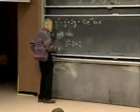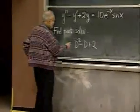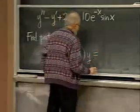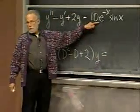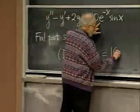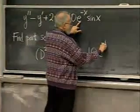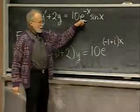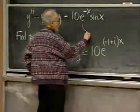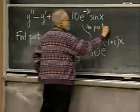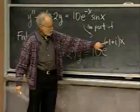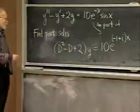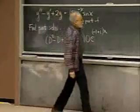Actually, let's not solve the messy quadratic for the complementary solution. We're going to find a particular solution. The input is 10e^(−x)sin(x). To use the exponential input theorem, we complexify: we replace the right-hand side with 10e^((−1+i)x), since sin(x) is the imaginary part of e^(ix). So this is the imaginary part of 10e^(−x)·e^(ix).